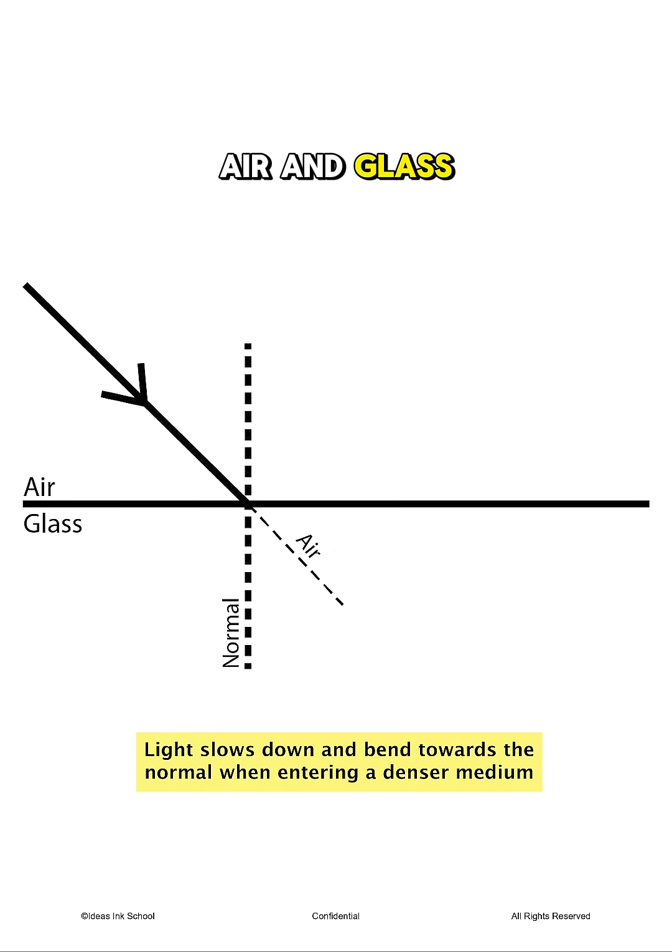As light hits the boundary between air and glass, since glass is a denser medium than air, light will slow down when it enters and bend towards the normal.